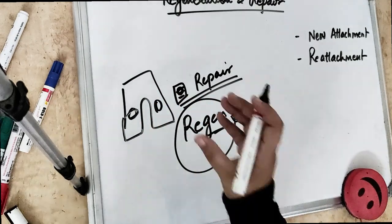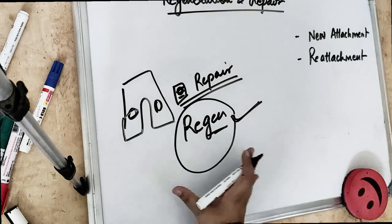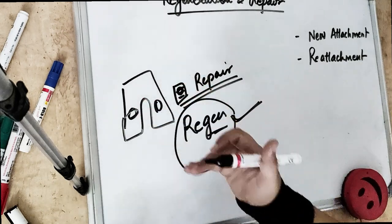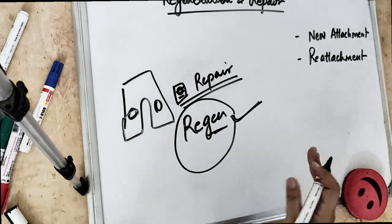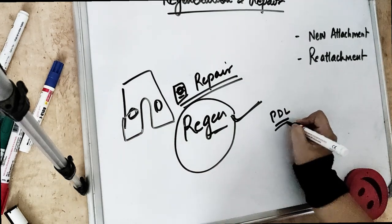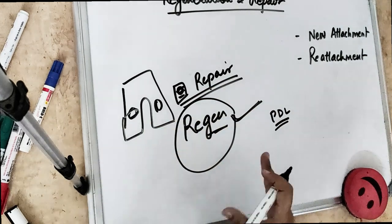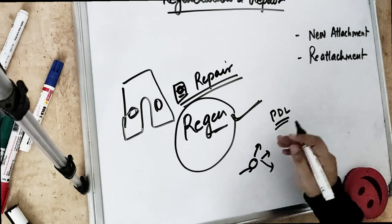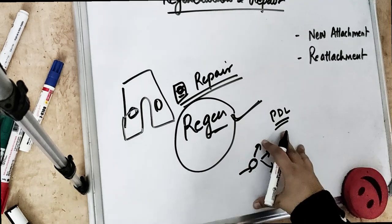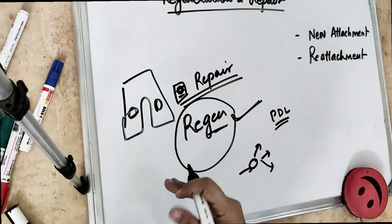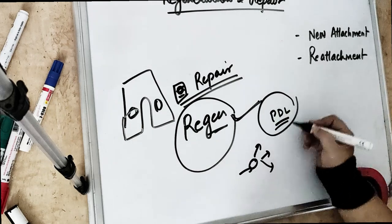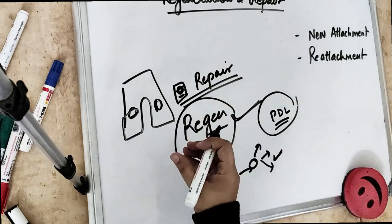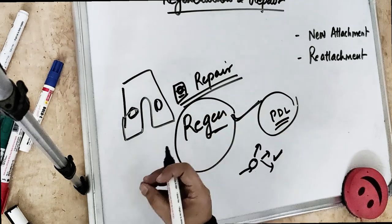Regeneration is the natural renewal of a structure - starting from the same cells that were already causing the growth of specific tissue. For example, generating PDL fibers, generating osteoblasts, generating odontoblasts - all these things are starting from scratch. These cells are again forming the PDL, forming the junctional epithelium. Growth from the same precursor cells.